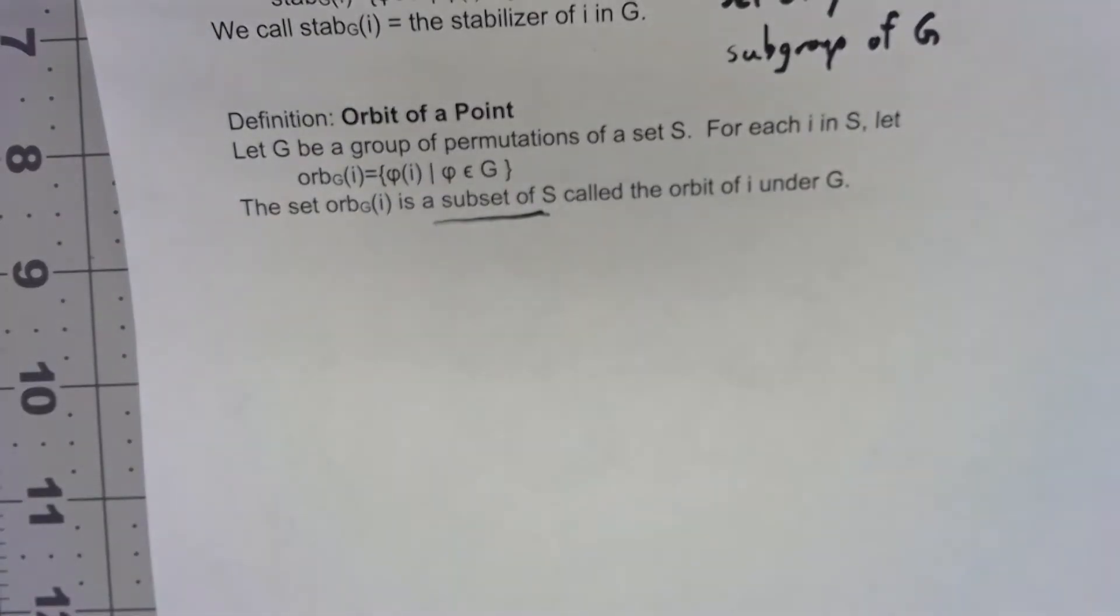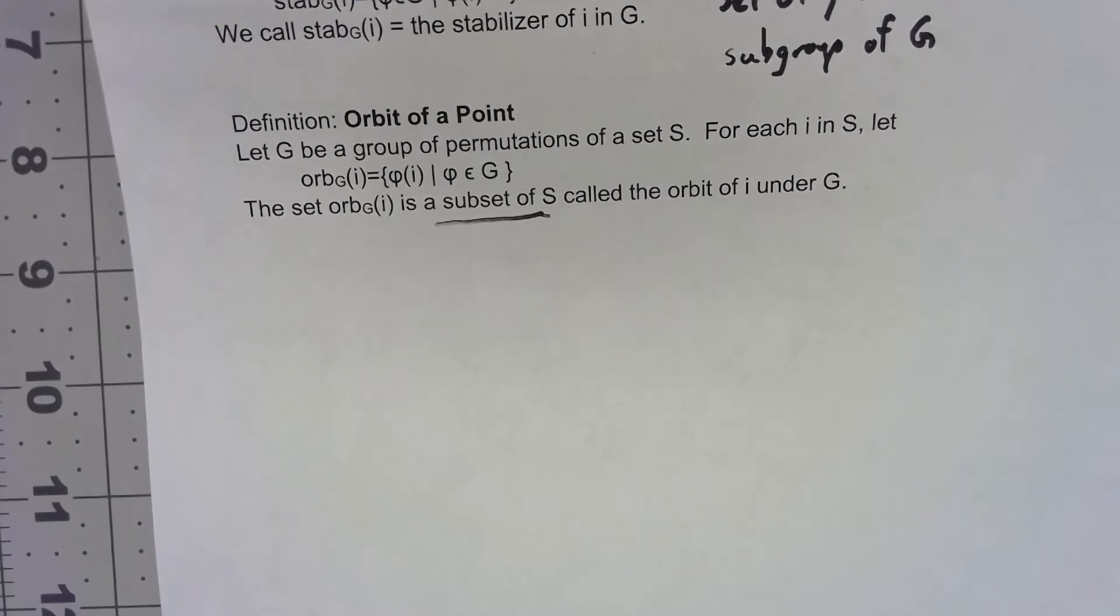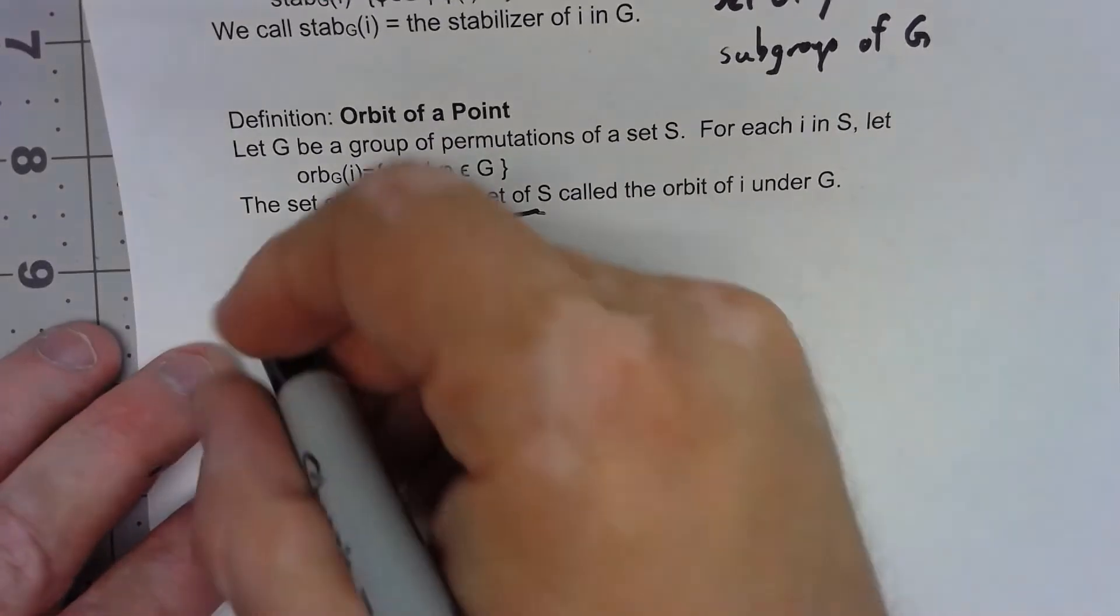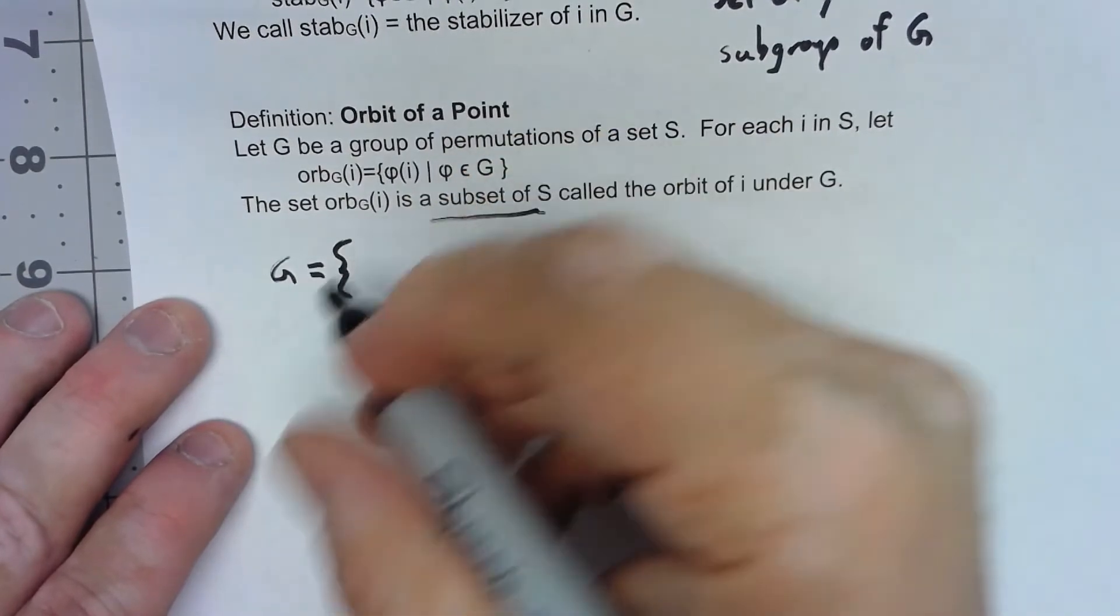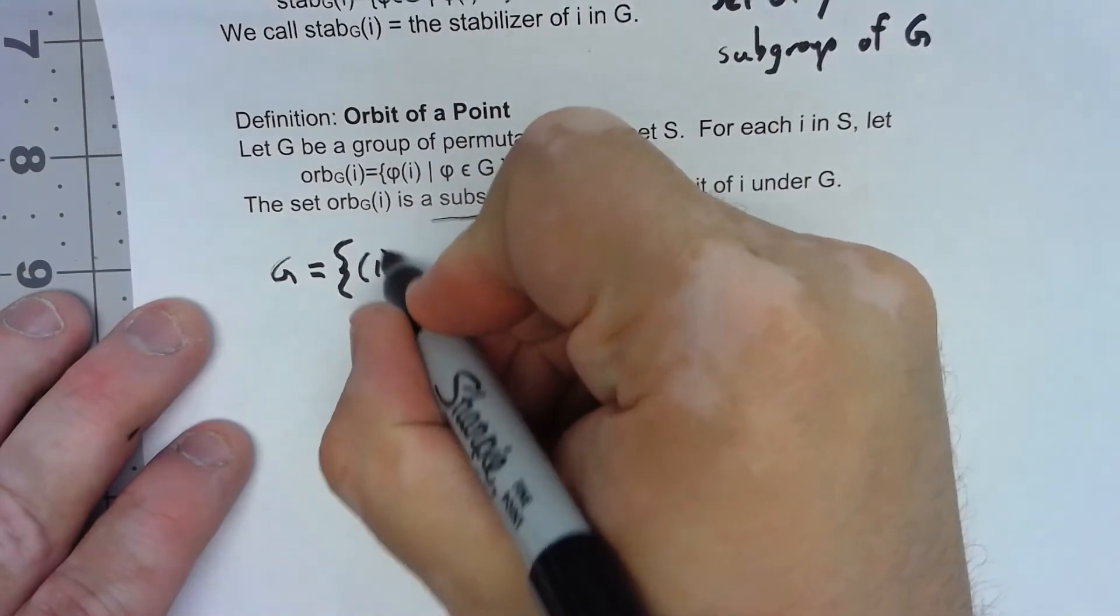These are confusing. So let's take a look at an example. So I'm going to set my group G to be the group, the identity of course.